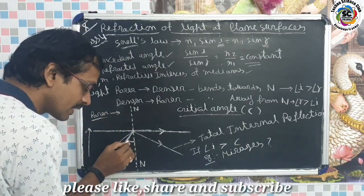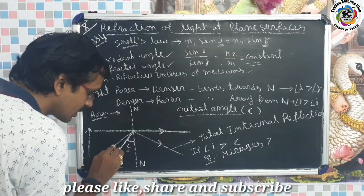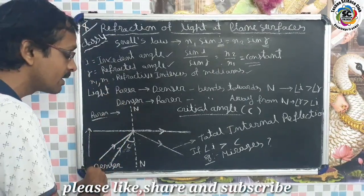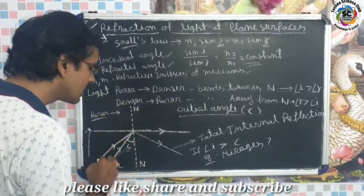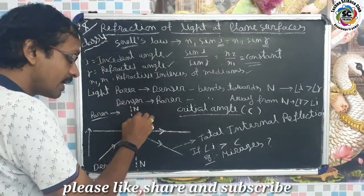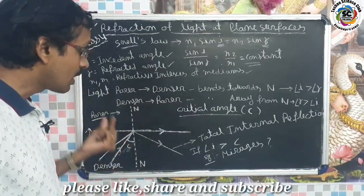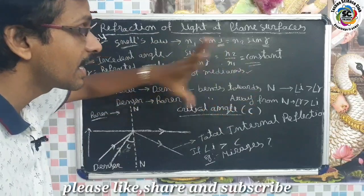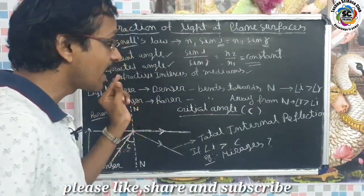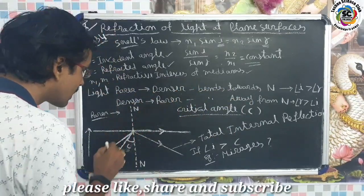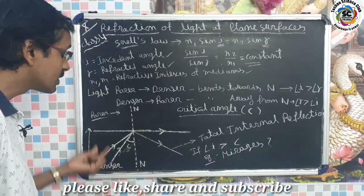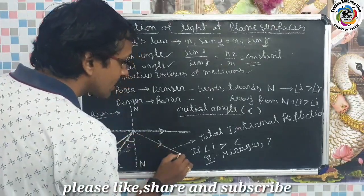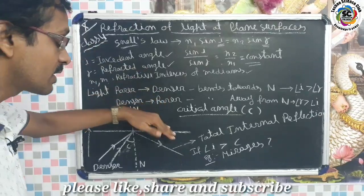If the incident angle is greater than the critical angle, the ray does not pass into the second medium. Instead, it is reflected back into the same first medium. At incident angles equal to or greater than the critical angle, refraction does not occur — the ray undergoes reflection back into the denser medium.